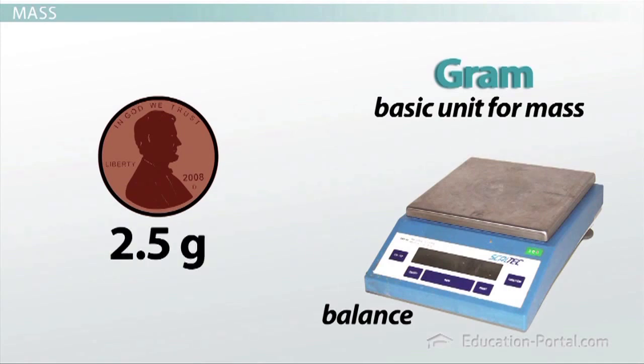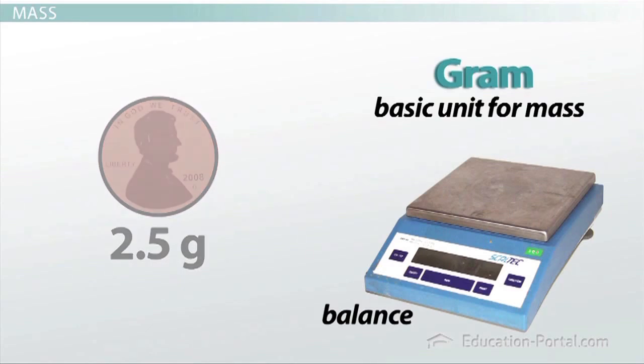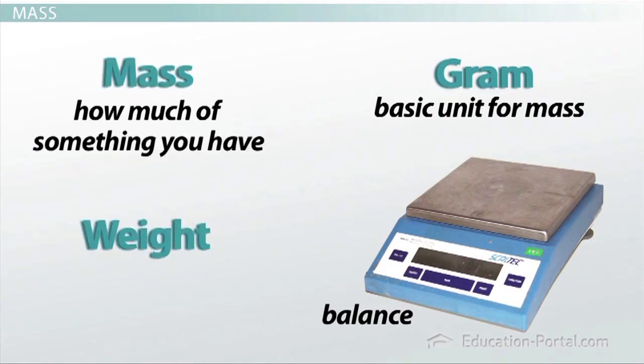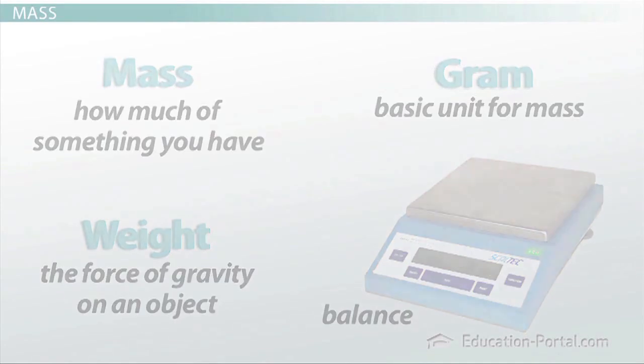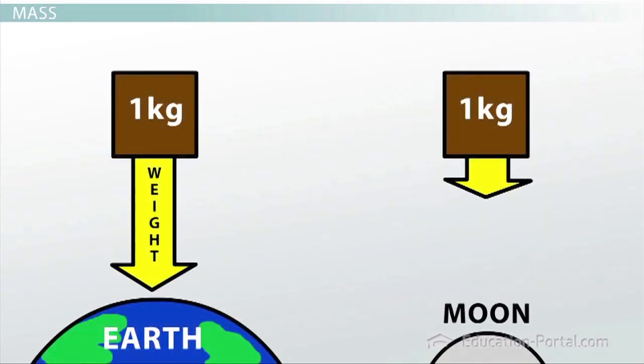Sometimes people get confused with the difference between mass and weight. They end up being quite similar because everything you and I do takes place on Earth. But mass and weight differ because mass is how much of something you have, and weight is the force of gravity on an object. Take a look at this example. Both of these blocks have the same mass.